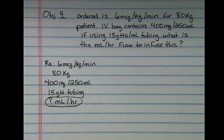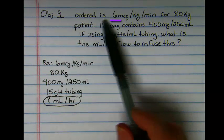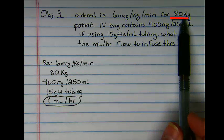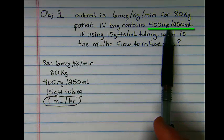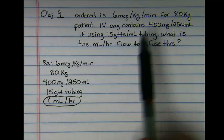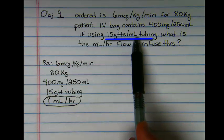The majority of the time you will find a problem like I have written here, which is an order for 6 micrograms per kilogram per minute for an 80 kilogram patient. IV bag contains 400 milligrams in 250 milliliters. If this is infusing using 15 drop per milliliter tubing, what is a milliliter an hour flow rate to infuse this?